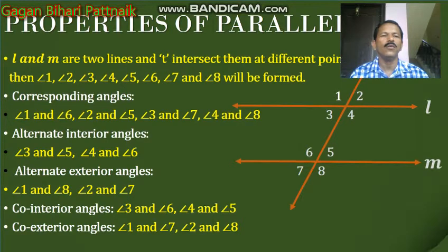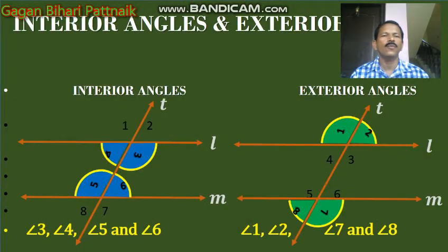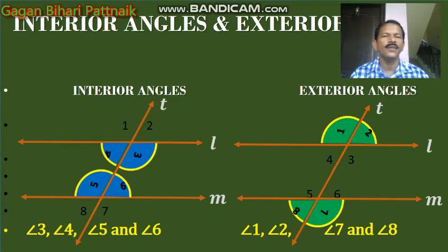Now we will discuss each type one by one. First, interior and exterior angles. Interior angles are the angles which lie inside the two parallel lines — they are called interior angles. Here, angle 3, angle 4, angle 5, and angle 6 lie inside the two parallel lines L and M, where T is the transversal. Exterior angles — angle 1, angle 2, angle 7, and angle 8 — lie outside the two parallel lines L and M and are called exterior angles.